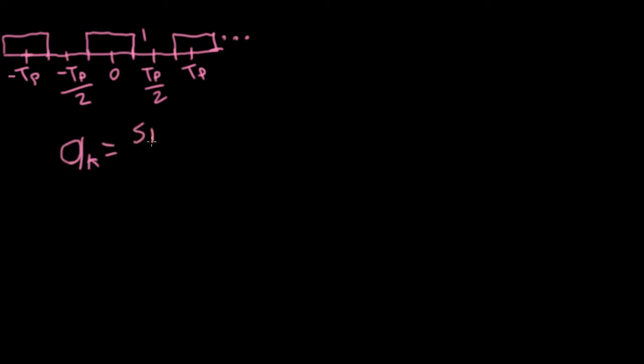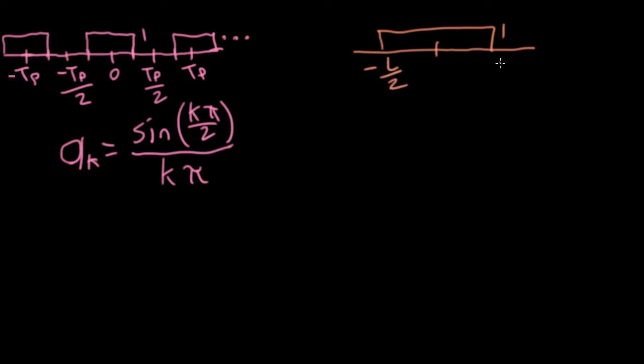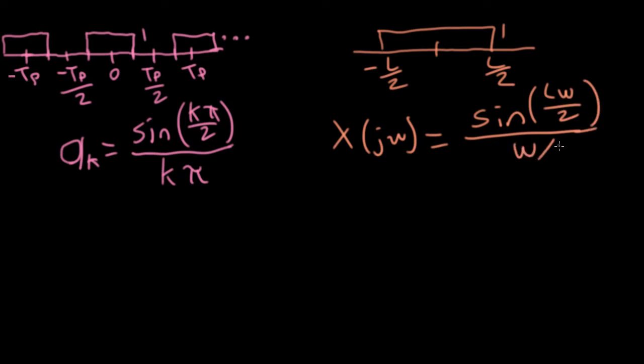We found the Fourier series coefficients of this to be sine k pi over 2 divided by k pi. Similarly, we've looked at Fourier transforms, which give us the ability to deal with non-periodic signals, such as a boxcar that is of length L, going from minus L over 2 to L over 2. And we found that the Fourier transform of this looked like sine L omega over 2 divided by omega over 2.